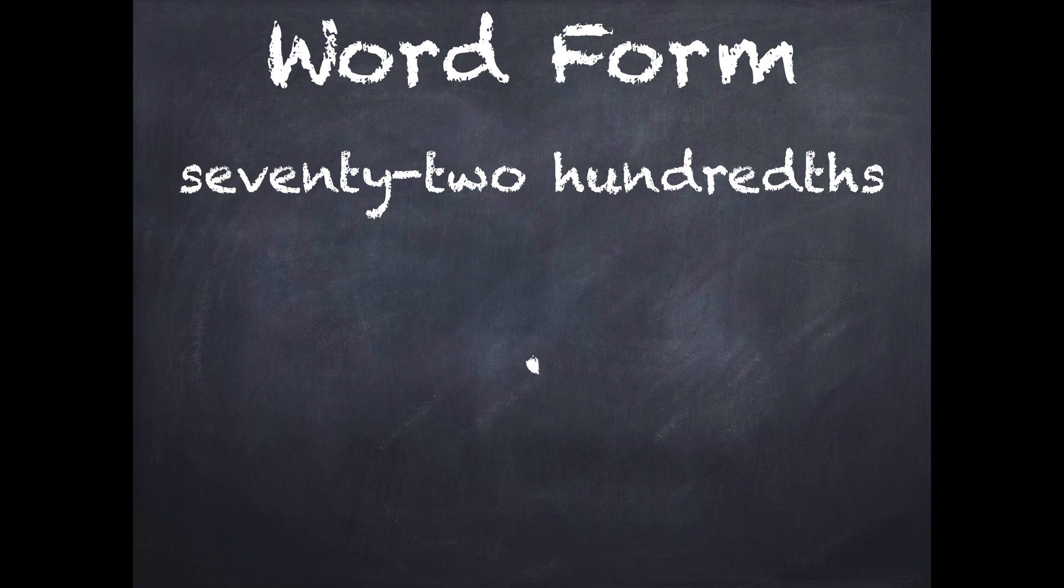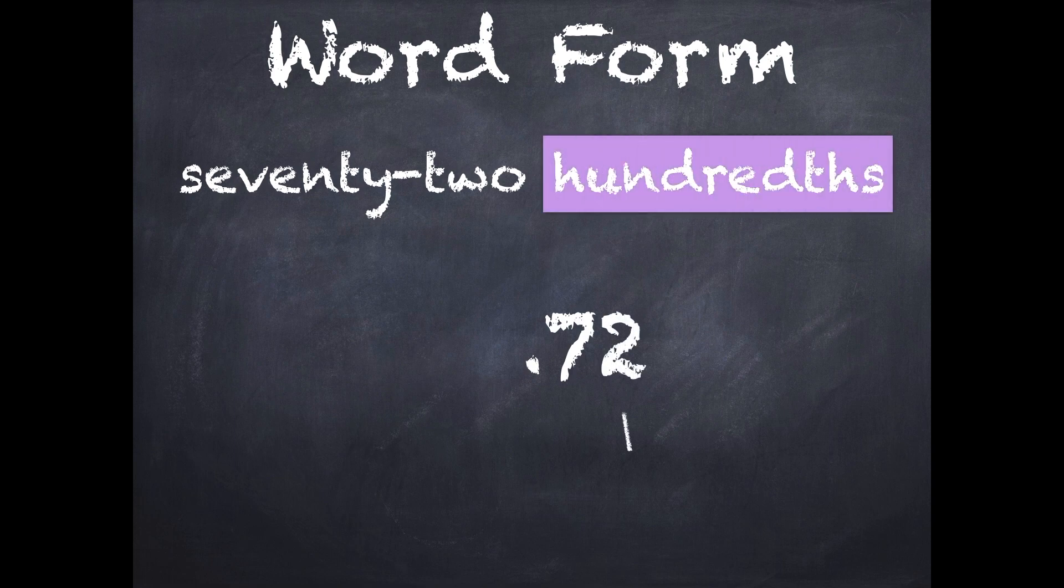It's just everything on the decimal side. So a decimal point, then we need it to say 72, and it needs to end in the hundredths place. So yeah, it ends in the hundredths place. It is .72, seventy-two hundredths.